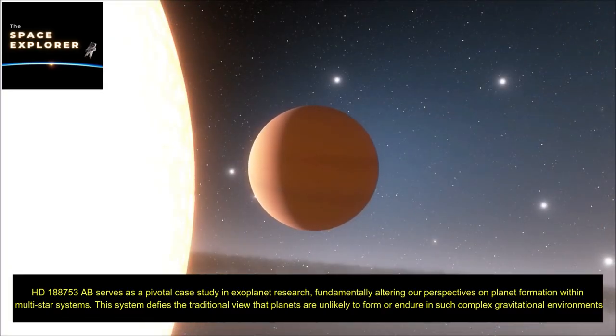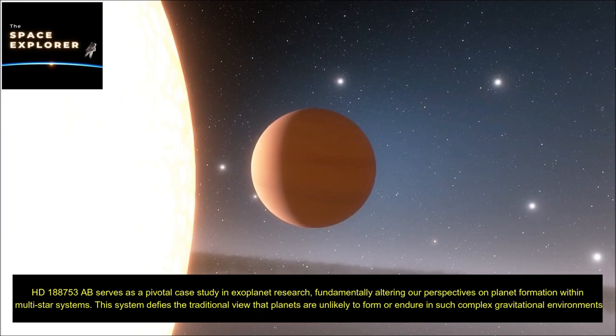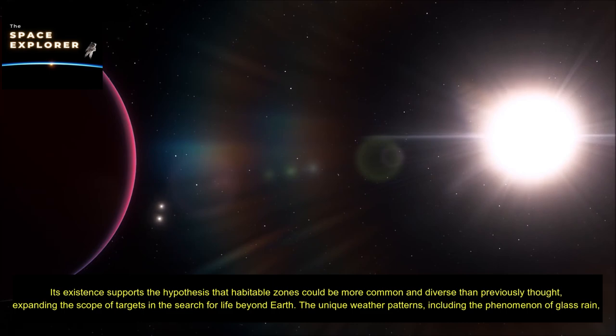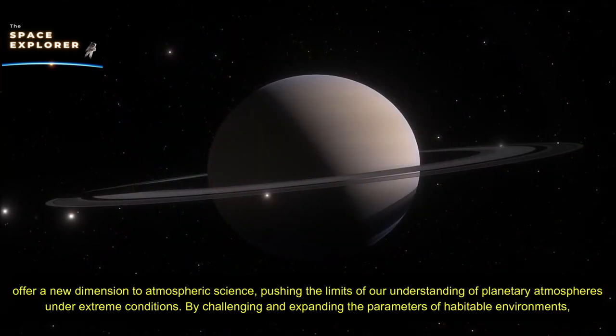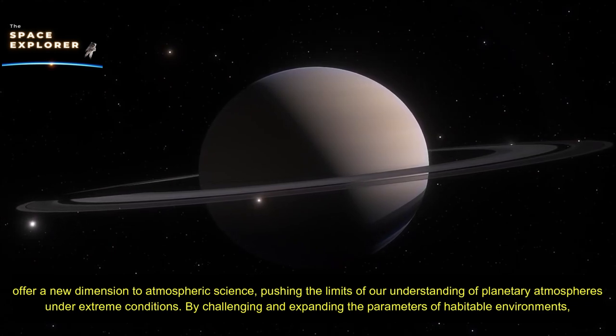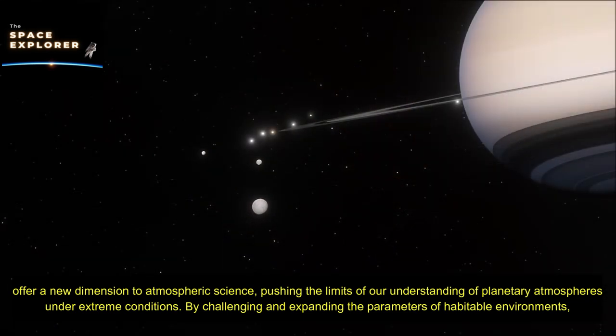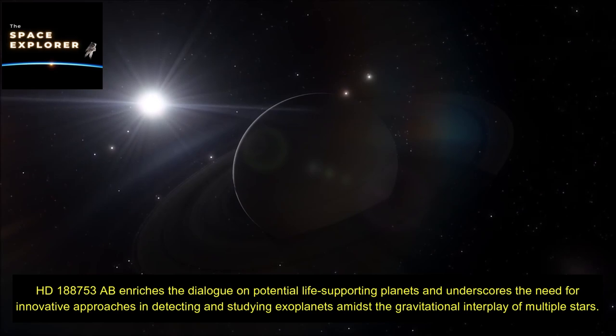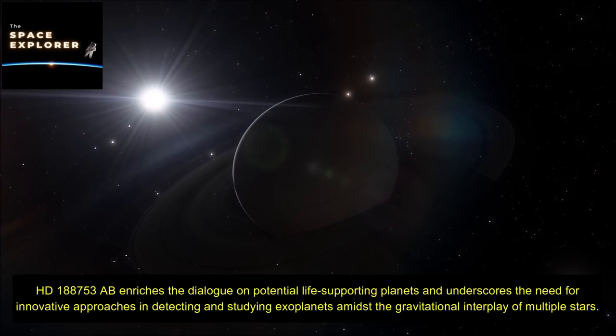HD 188,753 AB serves as a pivotal case study in exoplanet research, fundamentally altering our perspectives on planet formation within multi-star systems. This system defies the traditional view that planets are unlikely to form or endure in such complex gravitational environments. Its existence supports the hypothesis that habitable zones could be more common and diverse than previously thought, expanding the scope of targets in the search for life beyond Earth. The unique weather patterns, including the phenomenon of glass rain, offer a new dimension to atmospheric science, pushing the limits of our understanding of planetary atmospheres under extreme conditions.